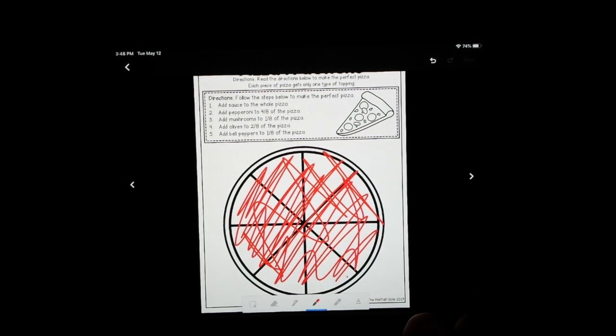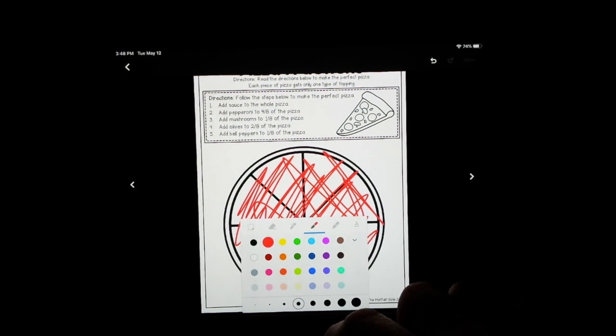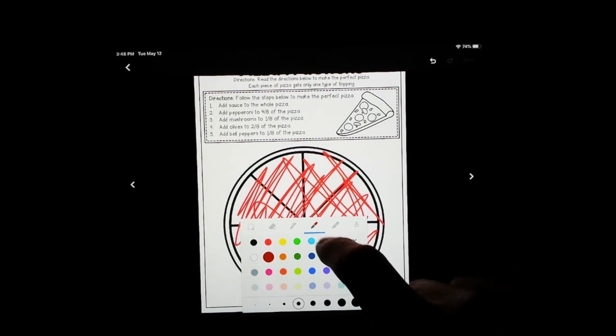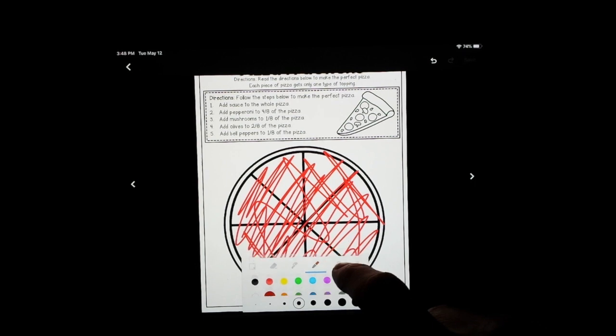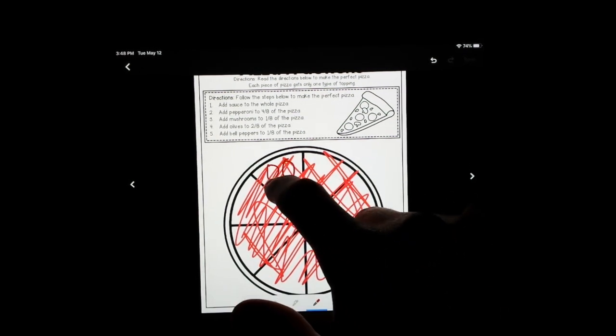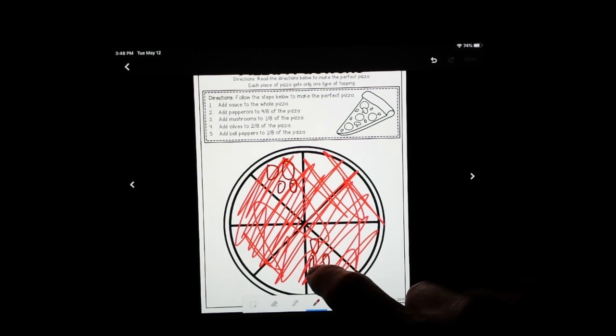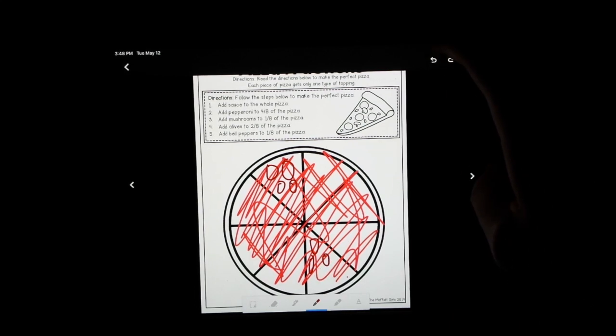Add pepperoni to four-eighths of the pizza. So you can get creative here and put it, do we have a good pepperoni color? It's going to have to do. You could put it here and there and everywhere. Maybe, one, two, but that's going to make it tricky if you mix them around.